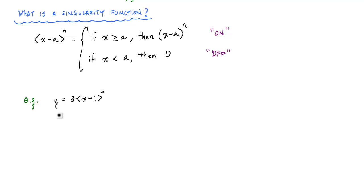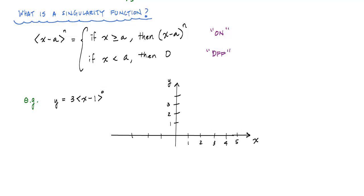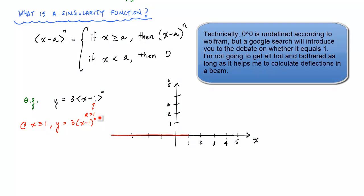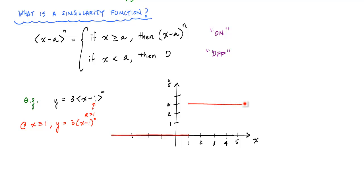Let's take this function: y equals three times the angle bracket x minus one to the zeroth power. If x is less than a — in this case a equals one — then this function is zero, so y is just zero. When x equals one, it jumps. This term becomes x minus one to the zero power, and anything to the zeroth power is one, so y becomes three times one, which is three. So any time at or after one, this whole thing has a value of three. This is what people call a step function, and it would describe a uniformly distributed load.